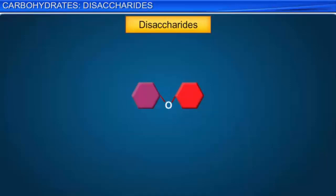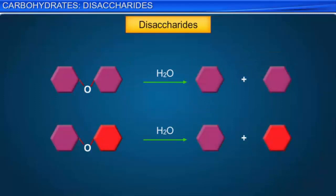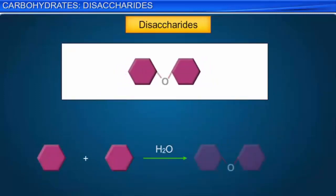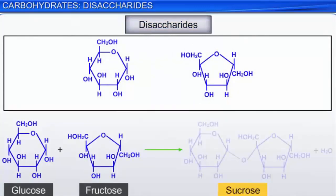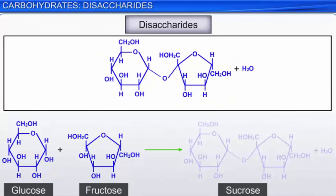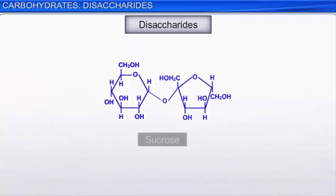Disaccharides are carbohydrates that yield two monosaccharide units on hydrolysis. The hydrolysis of a disaccharide may yield two molecules of the same or different monosaccharide. In disaccharides, the two monosaccharide units combine and result in the formation of an oxide linkage with the elimination of a water molecule. For example, sucrose has two monosaccharides — glucose and fructose — joined together by an oxide linkage. Such a linkage, formed when the hydroxyl group of the hemiacetal carbon of one monosaccharide condenses with the hydroxyl group of another monosaccharide, is called a glycosidic linkage. In other words, a linkage between two monosaccharide units through an oxygen atom is called a glycosidic linkage.